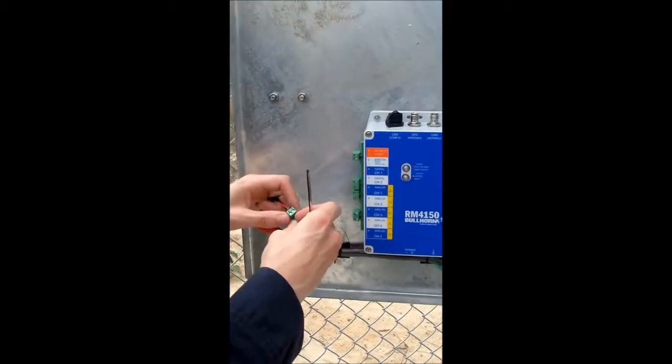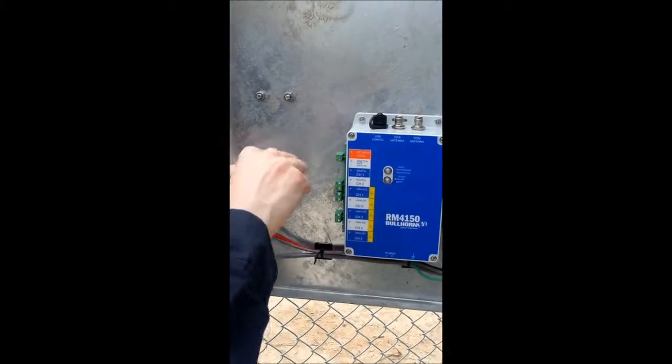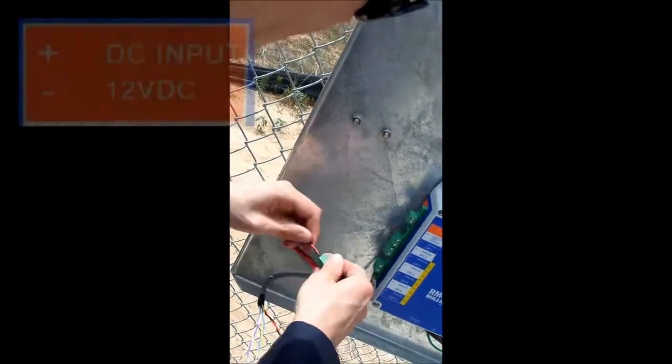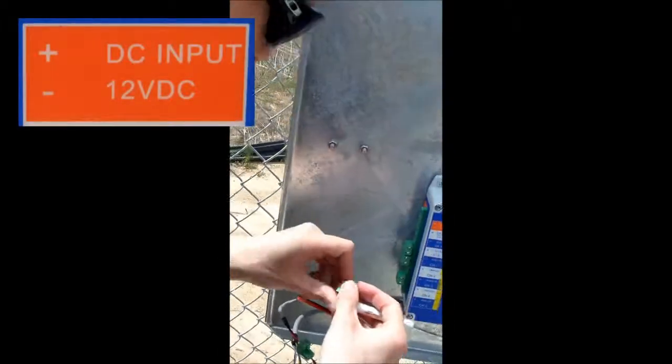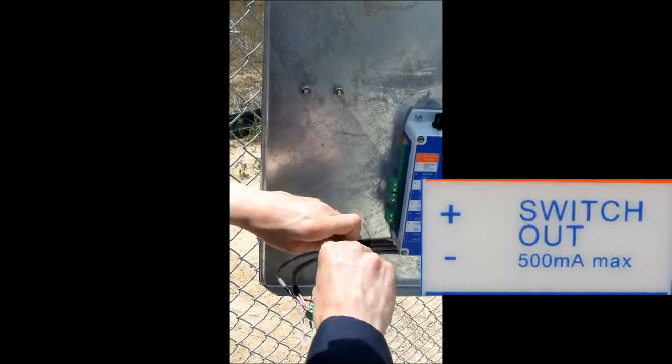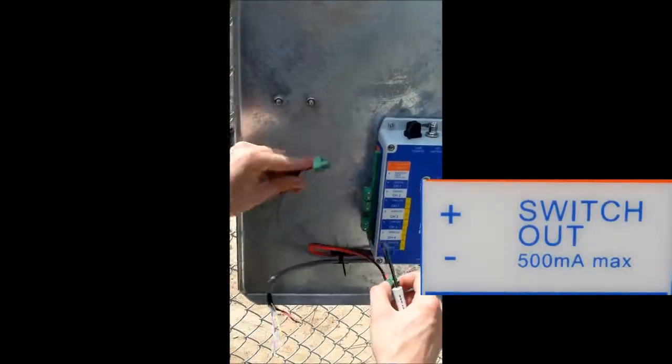Connect the power supply and the relay to the unit. The connection for the power supply is the top input and is labeled DC input 12 volts DC. The connection for the relay is below that and is labeled switch out.